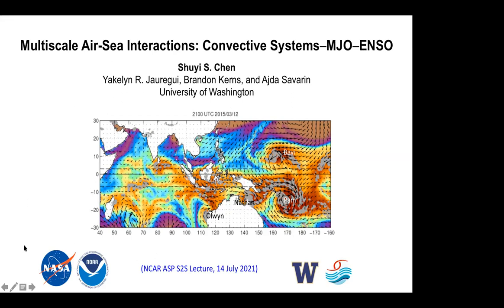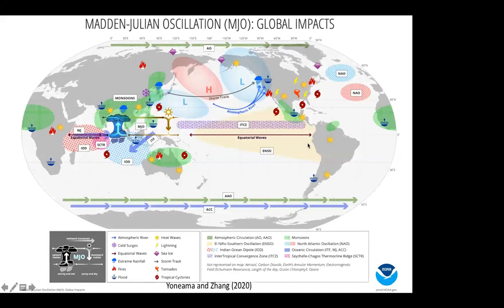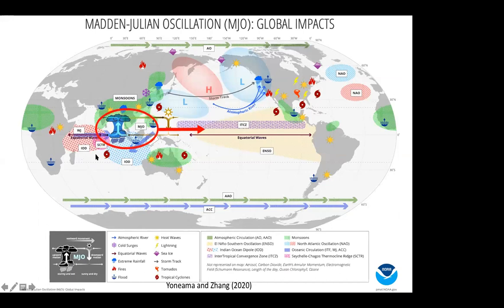This map shows the global impact of this multi-scale phenomenon. MJO is the phenomenon usually formed over the Indian Ocean, propagating toward the West Pacific and Central Pacific, and interacting with downstream phenomena like the ITCZ. Over the last few days, you've also heard a lot about the connection to mid-latitude wave trains and so on.